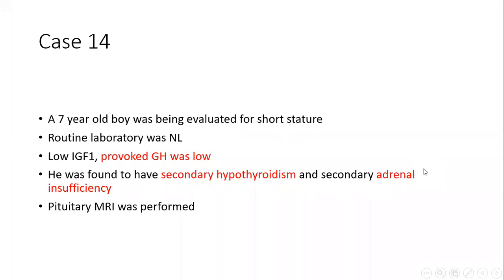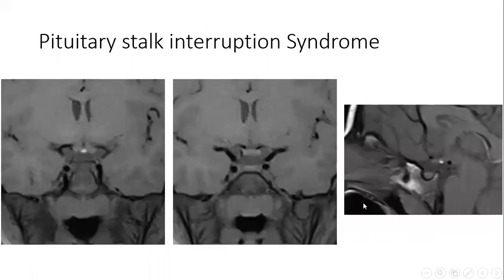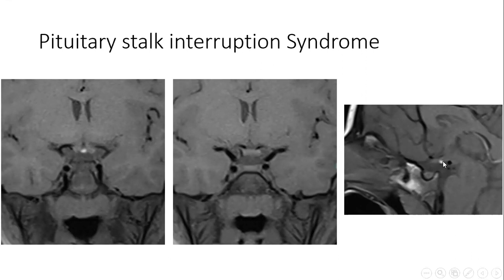The last case: a 7-year-old boy evaluated for short stature. Prolactin was normal, IGF-1 low, provoked growth hormone low, secondary hypothyroidism and secondary adrenal insufficiency. Pituitary MRI shows absence of the pituitary stalk, a small anterior pituitary, and a bright spot at the origin of the pituitary stalk — actually the ectopic posterior pituitary. This case was pituitary stalk interruption syndrome.